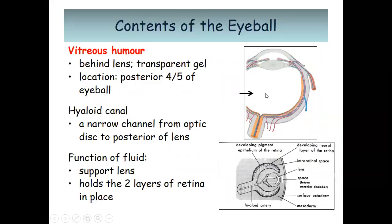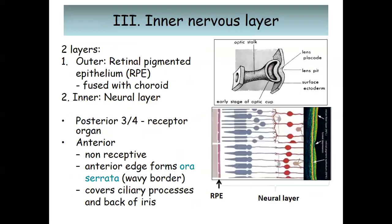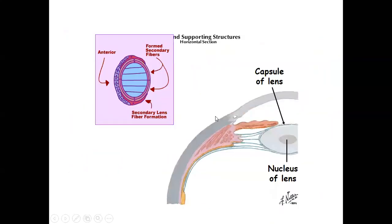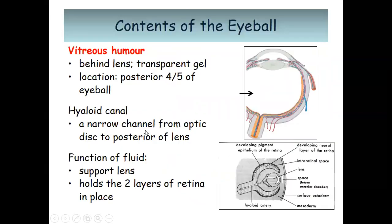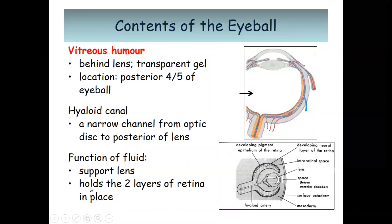The vitreous humor is located behind the lens. It is a transparent gel occupying four-fifths of the eyeball. It contains the hyaloid canal, a narrow channel from the optic nerve disc to the posterior of the lens. The function of the vitreous humor is to support the lens and hold the two layers of the retina in place.